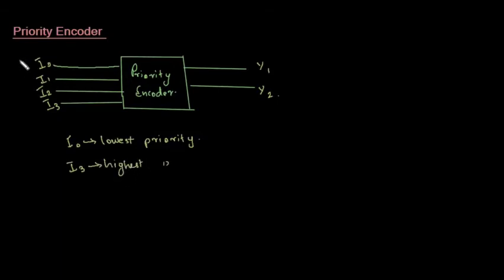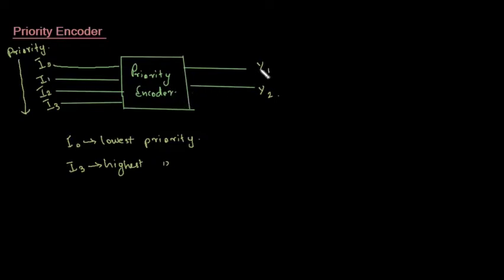So from I0 to I3, priority increases. Now what we have to do is create a truth table with outputs Y1 and Y2.